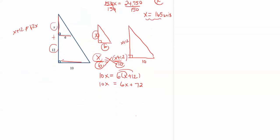Now we have 10x is equal to 6x plus 72. We need to get our letters on the left so I'm going to subtract 6x from both sides. That gives me 4x is equal to 72. Now divide both sides by 4 and 72 divided by 4 is equal to 18. So x is equal to 18 units.